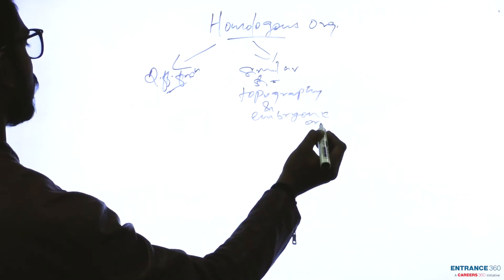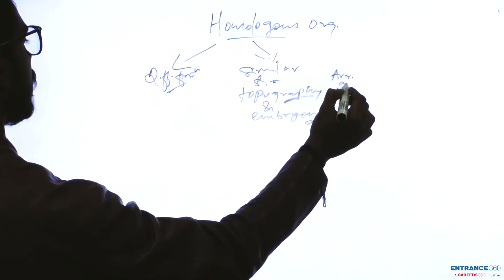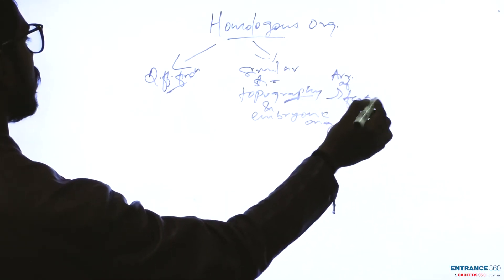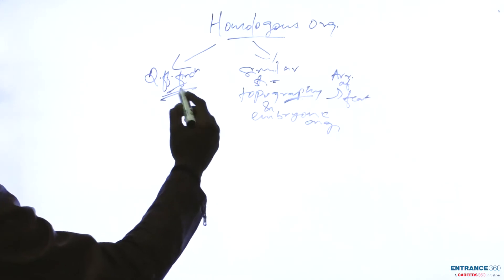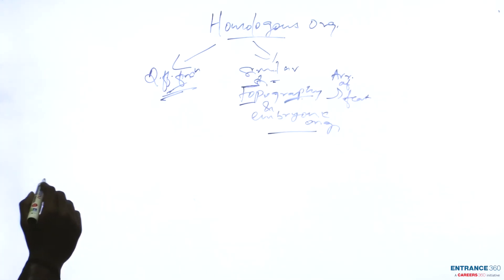Topography is basically an arrangement of features. So homologous organs have different function but similar structure, topography, and embryonic origin.